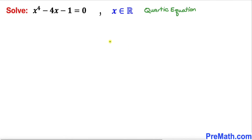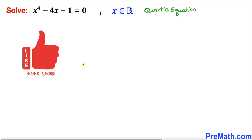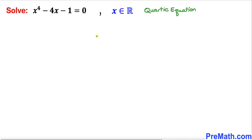Welcome to pre-math. In this video we are going to solve this given quartic equation: x⁴ - 4x - 1 = 0. Please don't forget to give a thumbs up and subscribe. So let's go ahead and get started with the solution.